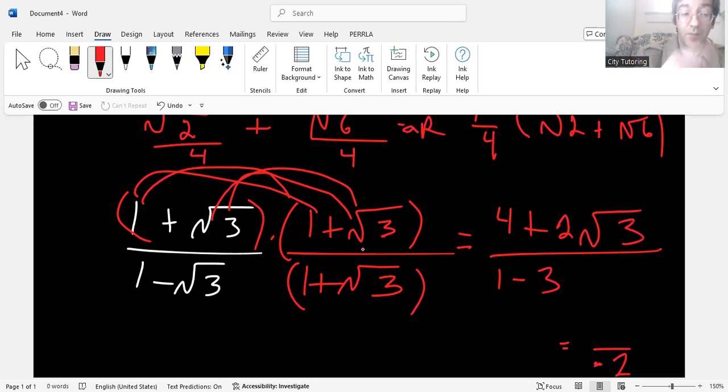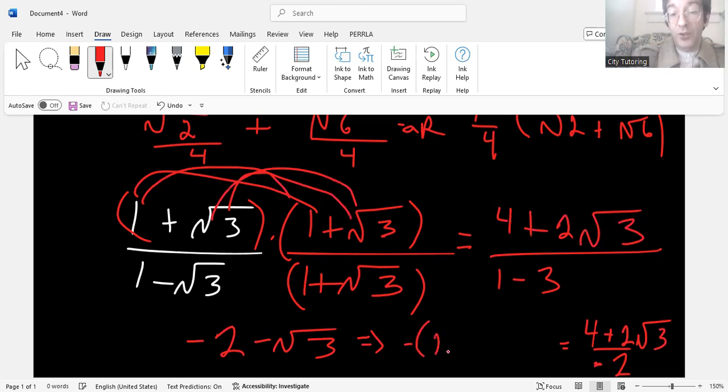And from here, you can reduce it. Because four divided by negative two is negative two. So your final answer is negative two minus radical three. Or you can show distribution. So you have negative outside the parentheses and then inside you would have two plus radical three. Either way, depending on your instructor.